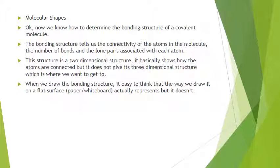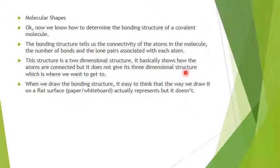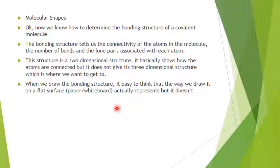After we find the bonding structure, we want to see what it leads to. The bonding structure tells us the connectivity of atoms in a molecule, the number of bonds, and the lone pairs associated with each atom. But this structure is a two-dimensional structure — it only shows connections; it doesn't give us the three-dimensional structure. When we draw it on a flat surface, it's easy to think that's what the molecule looks like, but it isn't. Every molecule is three-dimensional — everything around us is three-dimensional, so everything made from atoms has to be too.